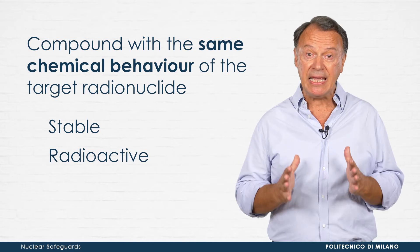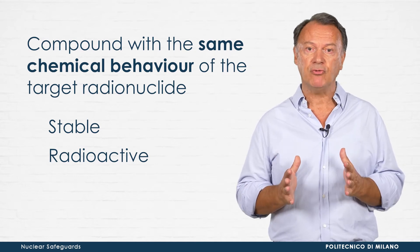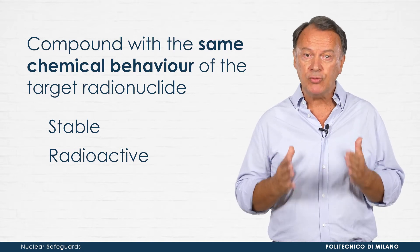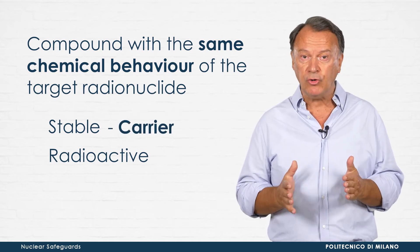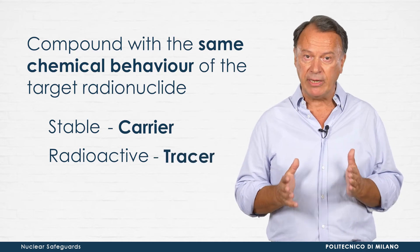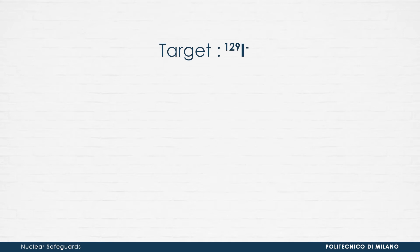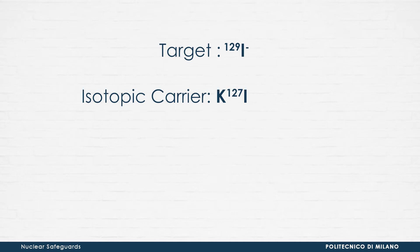For the same purpose, a stable or radioactive compound with the same chemical behaviour as the target radionuclide could be added to the sample in a known amount. The former is called a carrier and it could be isotopic or non-isotopic; the latter is named a tracer. For example, if the target radionuclide is iodine-129 as iodide anion, an isotopic carrier is iodine-127 as potassium iodide, but not iodate, due to the different chemical behaviour of iodine in the iodide and iodate forms.